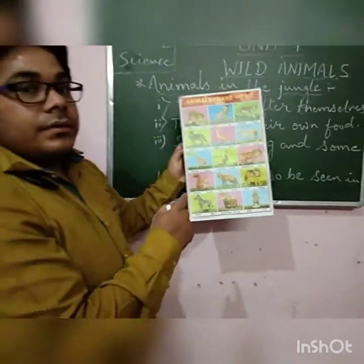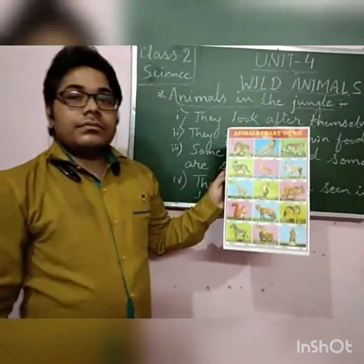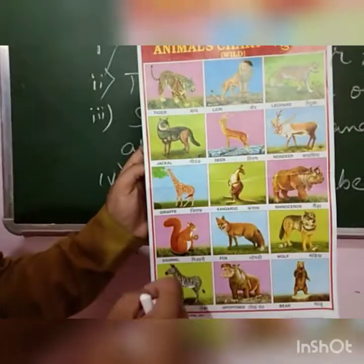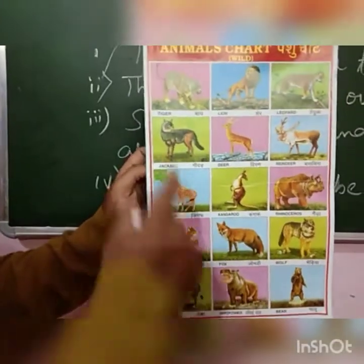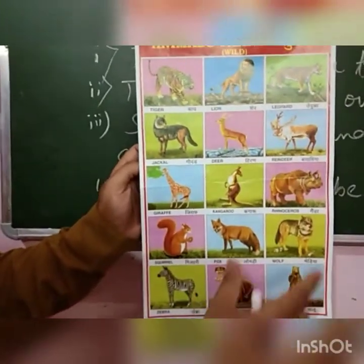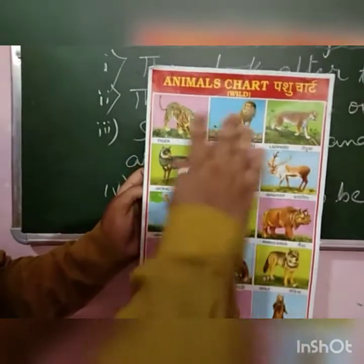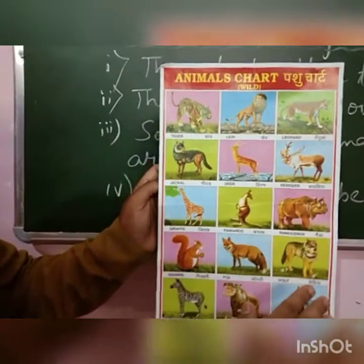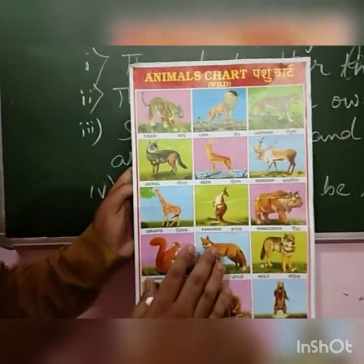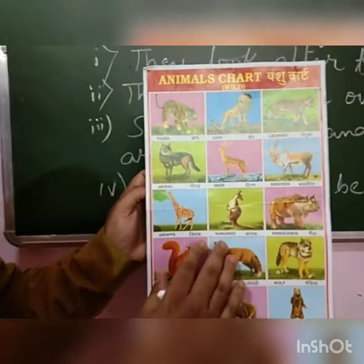This is deer, this is reindeer, giraffe, kangaroo, rhinoceros, fox, wolf, zebra, hippopotamus, and bear. All these animals are big.